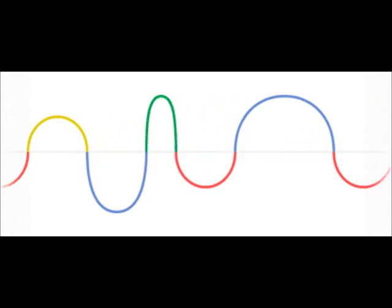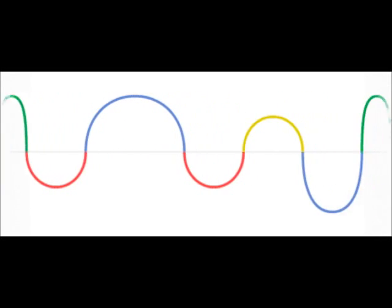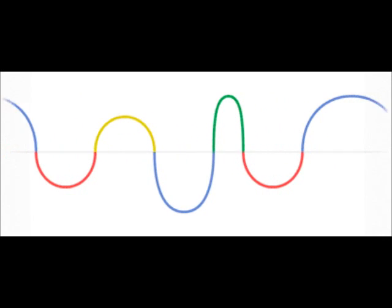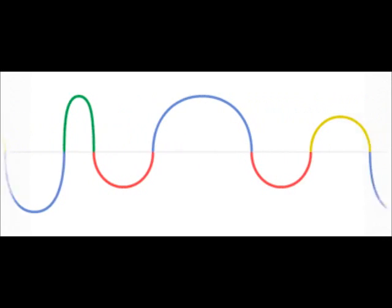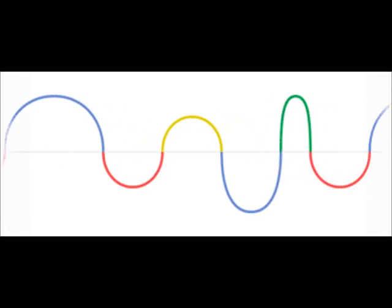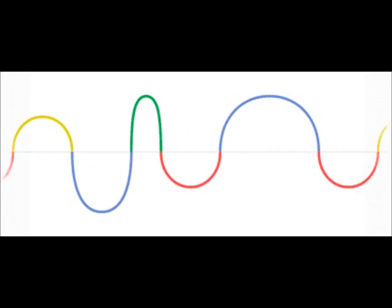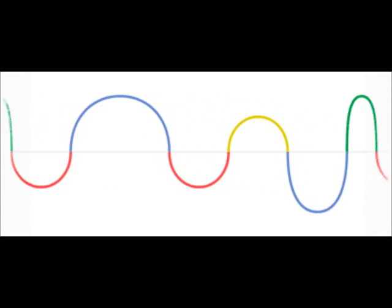Heinrich Rudolf Hertz was a German physicist who clarified and expanded the electromagnetic theory of light that had been put forth by Maxwell. He was the first to satisfactorily demonstrate the existence of electromagnetic waves by building an apparatus to produce and detect radio waves.